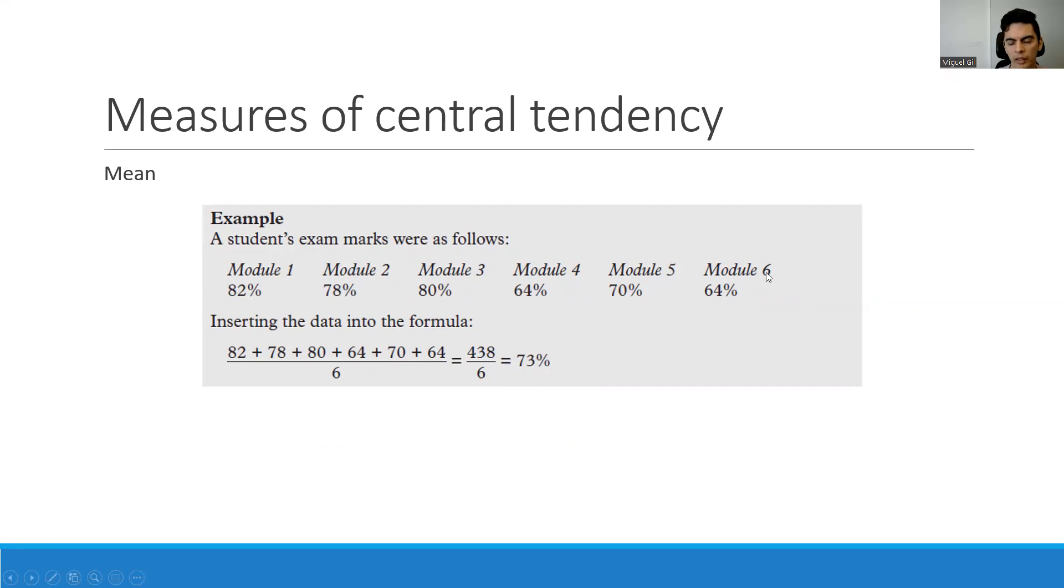So maybe you have 82 minutes on day one, 78 day two, and so on. Six days, but on Sunday you rest. So that will give you zero. If you do this exactly like this, imagine day seven and you have zero minutes of exercise. If you calculate the average with this zero, your average of minutes per exercise will drop drastically.